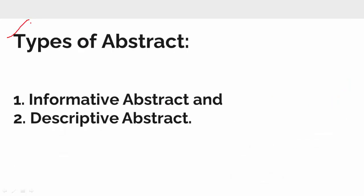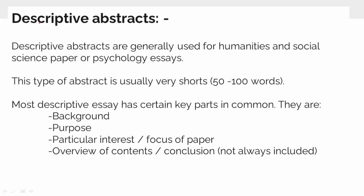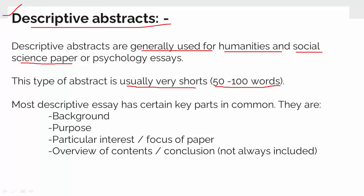There are 2 types of abstracts. One is the informative abstract and the next is the descriptive abstract. Descriptive abstracts are generally used for humanities and social science papers. They are usually short — about 50 to 100 words — and the common parts include the background, purpose, the focus of the paper, and an overview of the contents or conclusion.